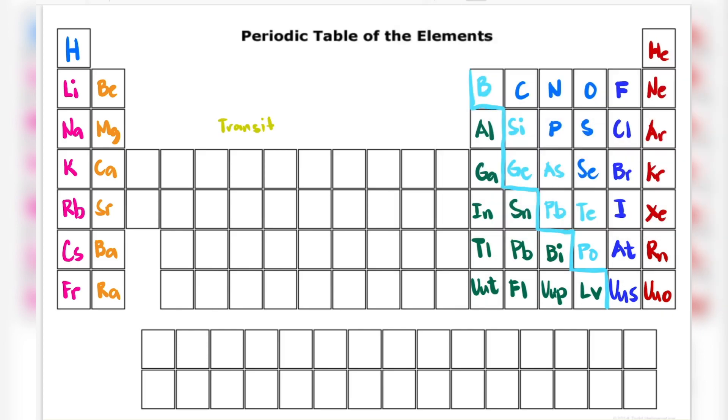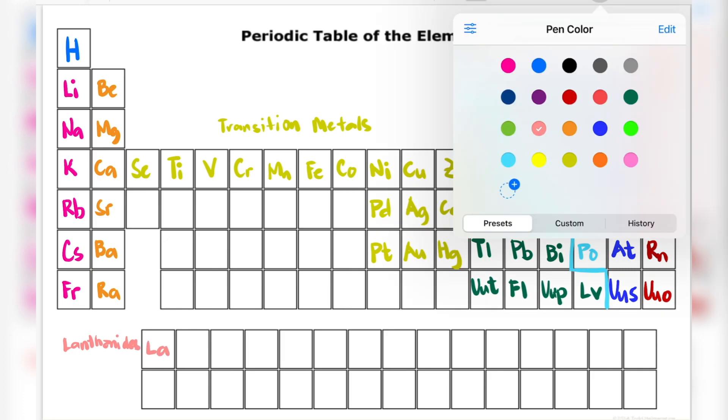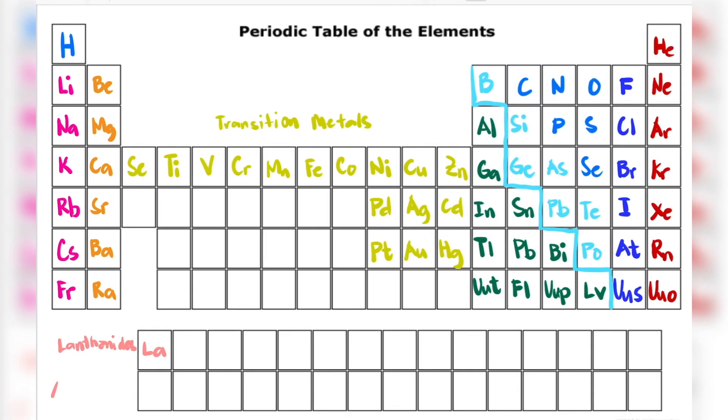So this is a very challenging part for me because it is 118 elements. I'm not good at memorization so I'm decoding it into phrases, especially the lanthanides and the actinides part.